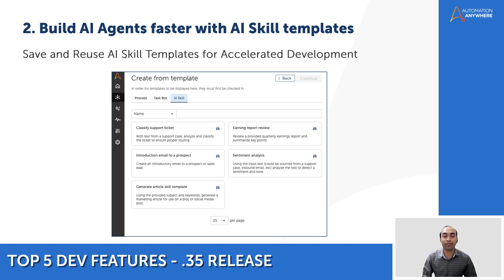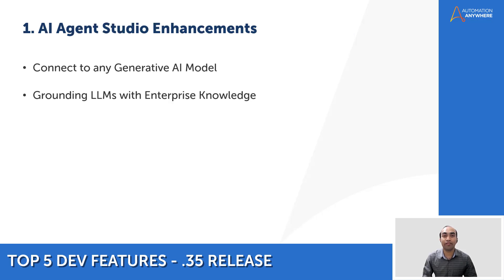Saving the best for last — my personal favorite feature in this release is the enhancements available in AI Agent Studio. Two major enhancements: first, you can now connect to any generative AI model, offering greater flexibility and power in your automations. Additionally, you can also connect to Automation Anywhere Enterprise knowledge — that is our RAG service — expanding the capabilities of your AI agents.